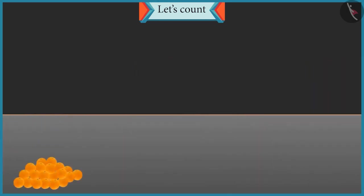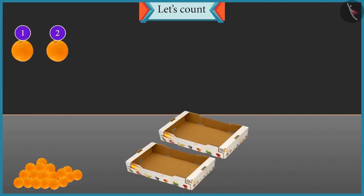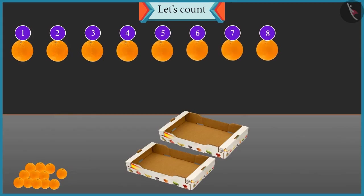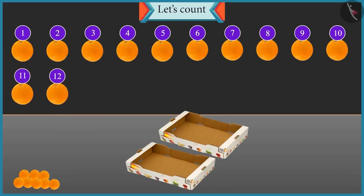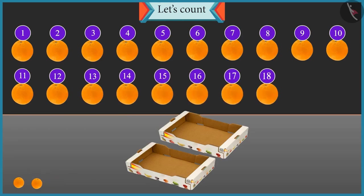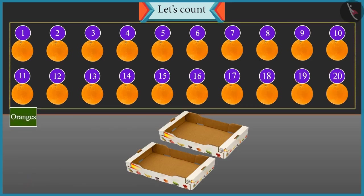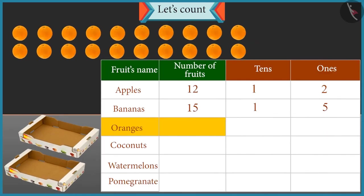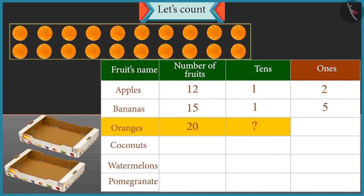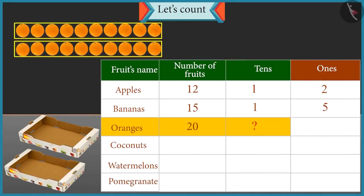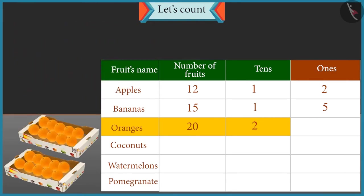Now let's count these oranges and place them in the box. 1, 2, 3, 4, 5, 6, 7, 8, 9, 10, 11, 12, 13, 14, 15, 16, 17, 18, 19 and 20. There are 20 oranges. Well done. Now tell me, how many tens are there in 20? With 20 oranges, 2 groups of 10 oranges will be formed. So there are 2 tens. And how many ones are there in 20? There are no oranges left here. So number of ones is 0. Well done Chotu.